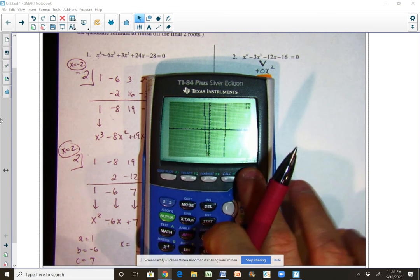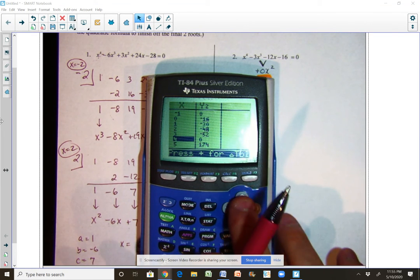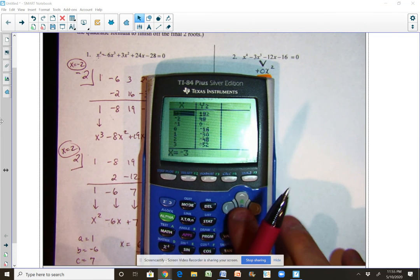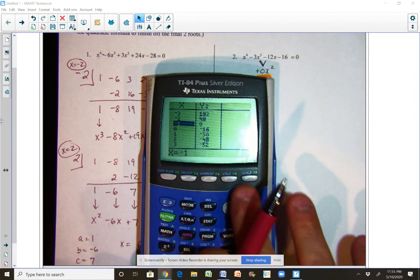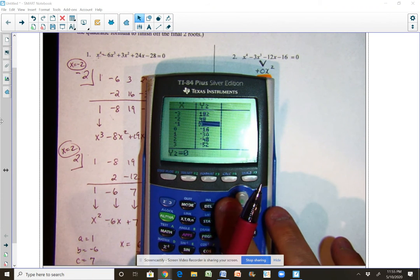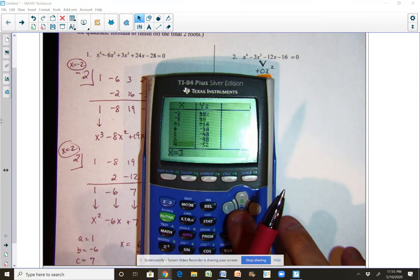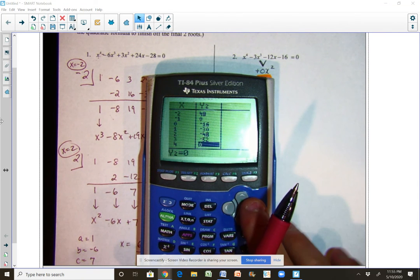So we double check that and verify it on the table of values. Sure enough, we see at negative 1, right here, there's a root since the output is 0, and then again at positive 4 there's also another root.